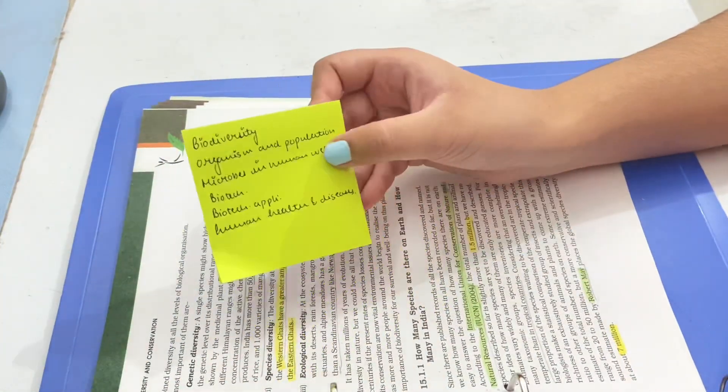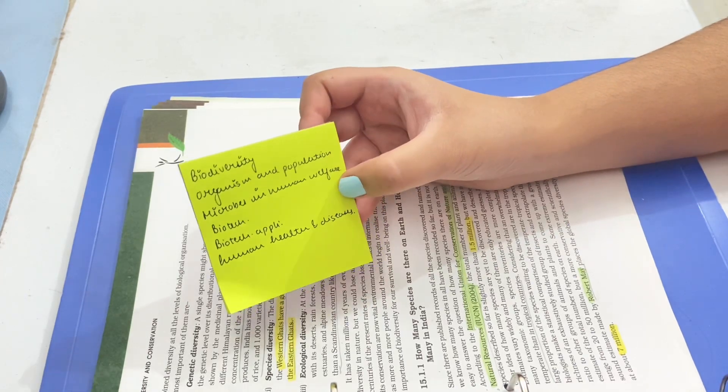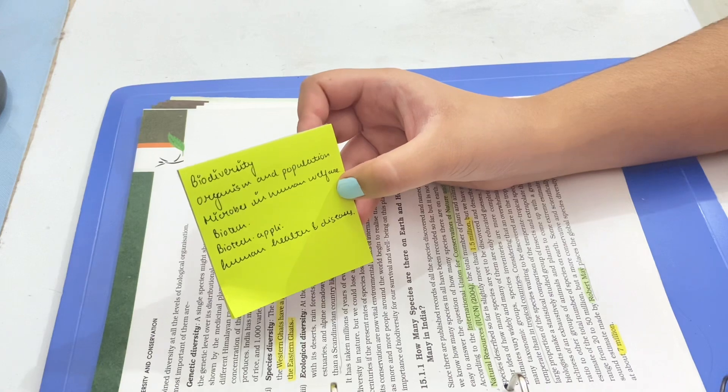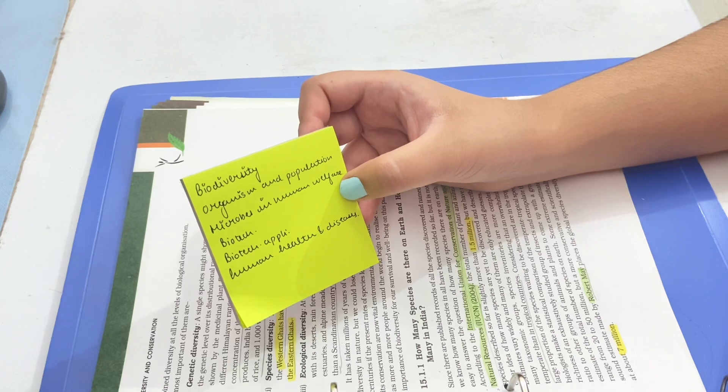So this is my to-do list for today. This is the syllabus that is going to come in my biology term exam and I will try to revise the entire syllabus today. So I'm going to start with the biodiversity chapter first.